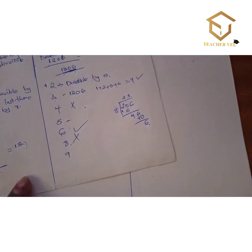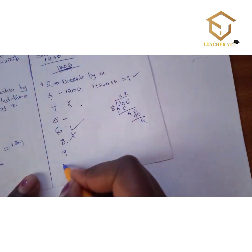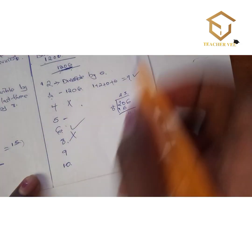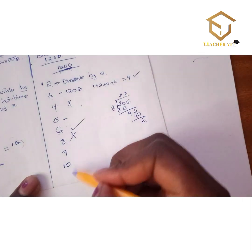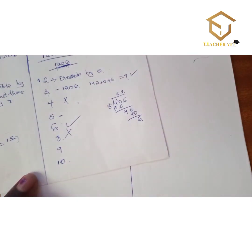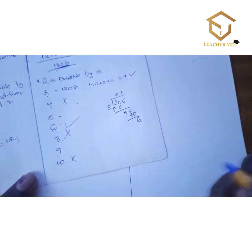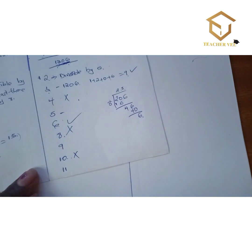For divisibility by 10, the last digit must be zero. Since our last digit is 6, this number is not divisible by 10.